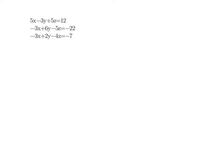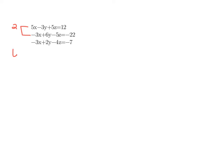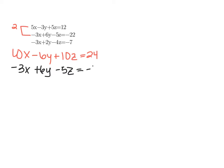To do that, I'm going to take the top two equations and do the same process I would with solving systems of two variables. I'm going to multiply the entire top equation by 2, giving me 10X minus 6Y plus 10Z equals 24. Then I keep the equation that was already there: negative 3X plus 6Y minus 5Z equals negative 22.